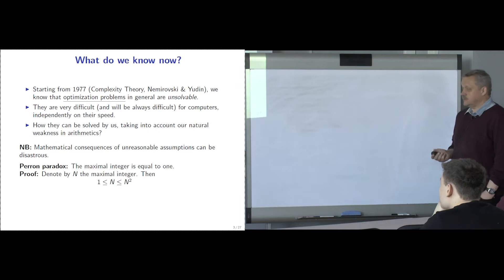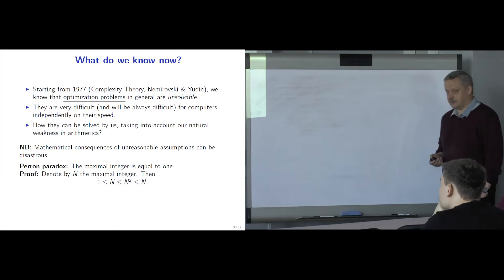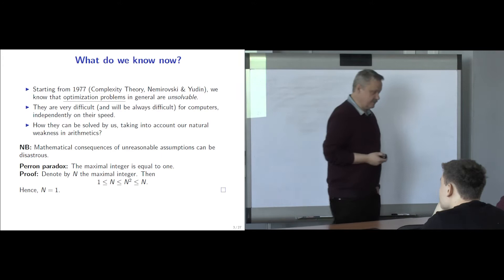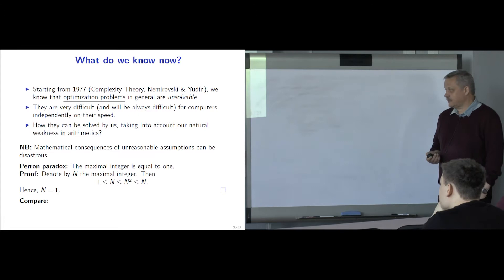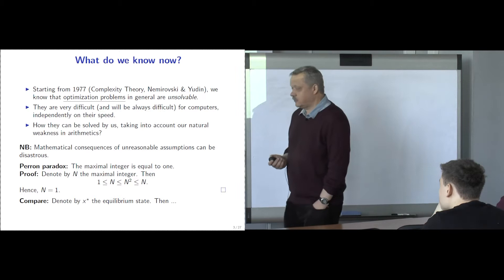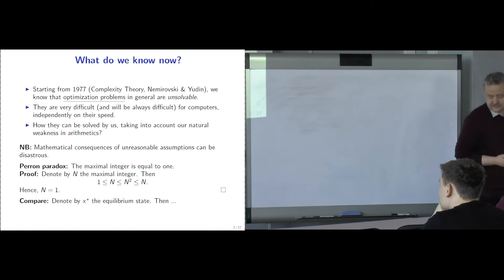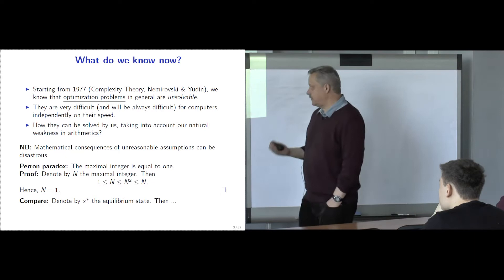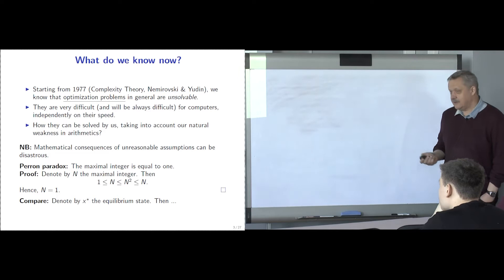Since n is bigger than 1, n is smaller than n squared. And since n is the maximal integer, n squared is smaller than n. So the maximal integer equals n. This is a mathematical proof — and you can compare it with things often used in economic literature: denote by x-star the equilibrium state. There is not too much difference from the beginning of Perron's proof. Implicit assumptions that something exists or can be reached by the system can result in completely wrong mathematical conclusions.